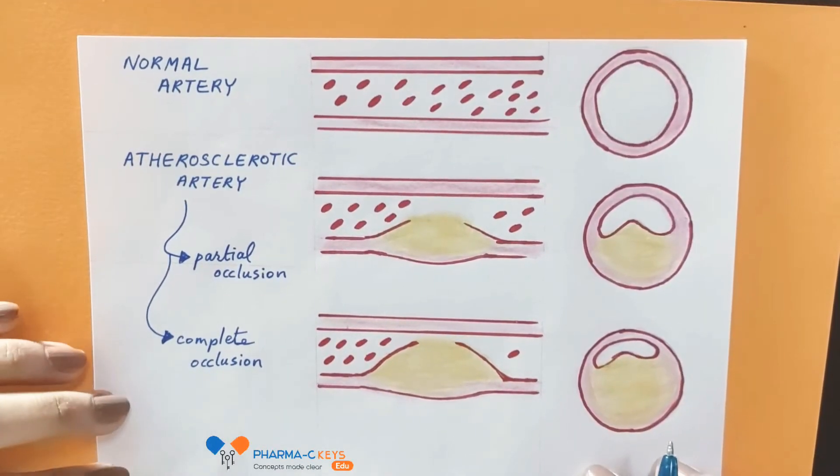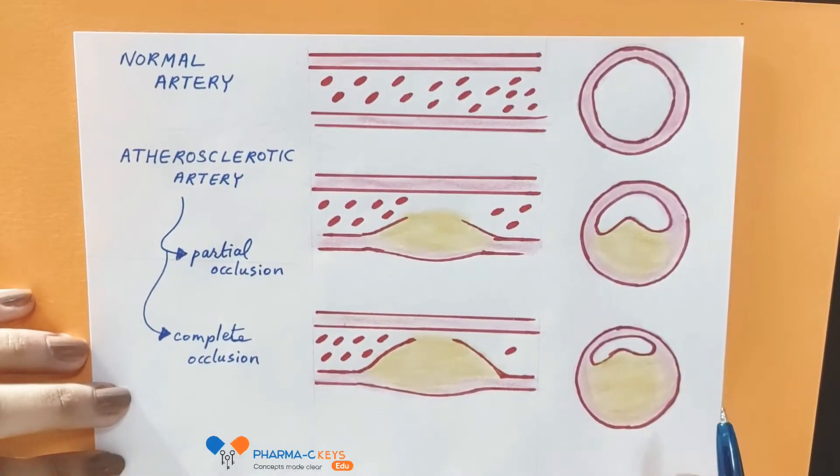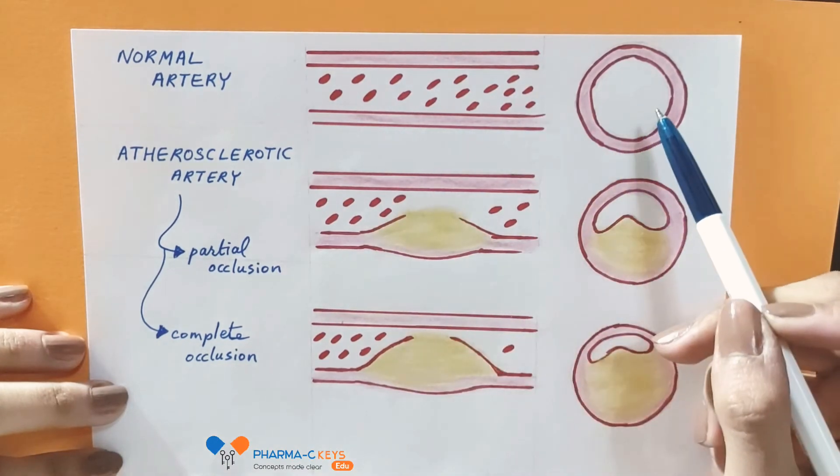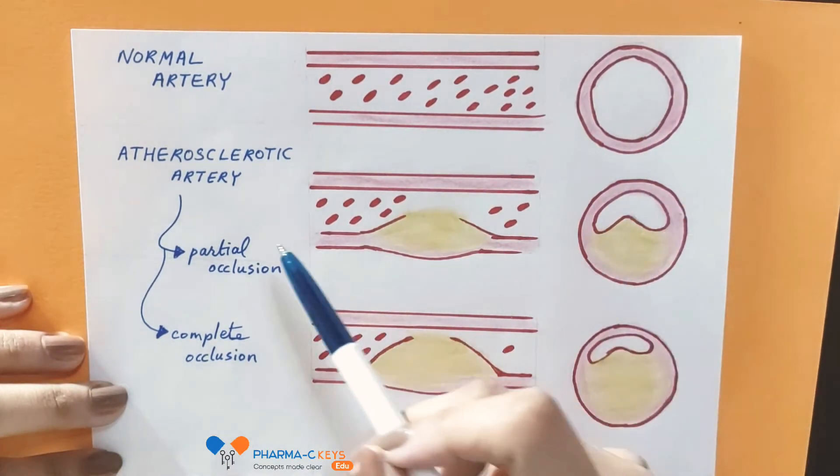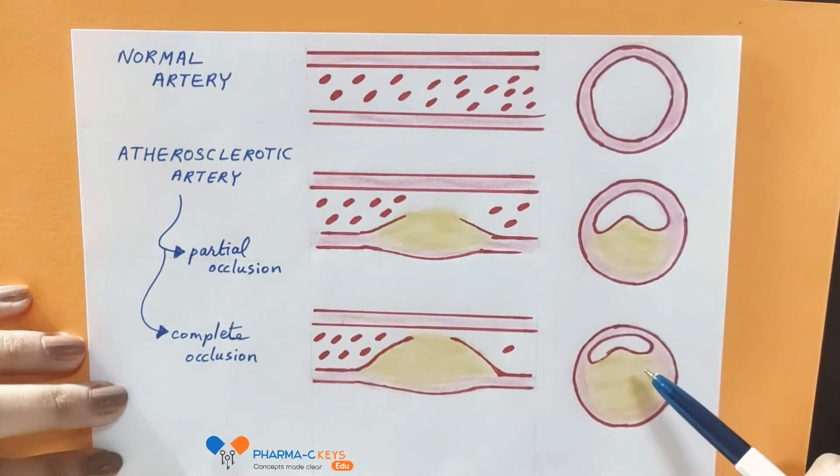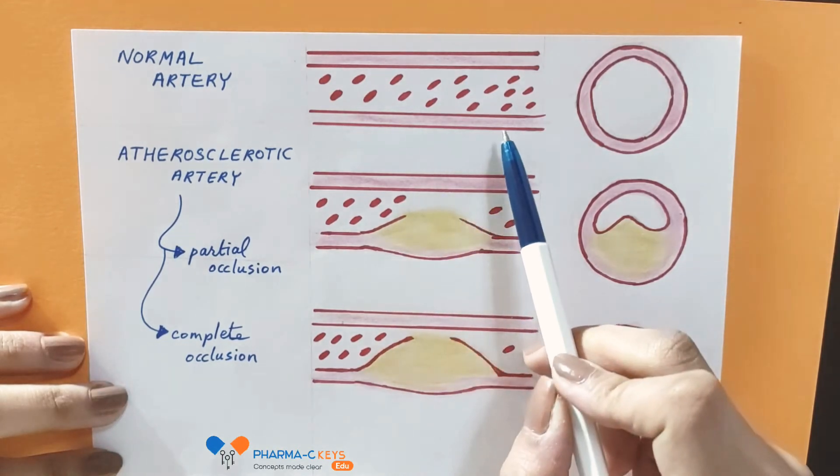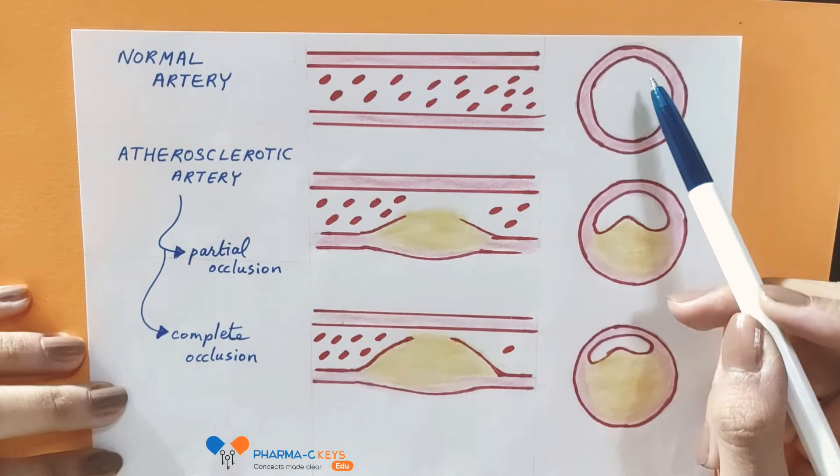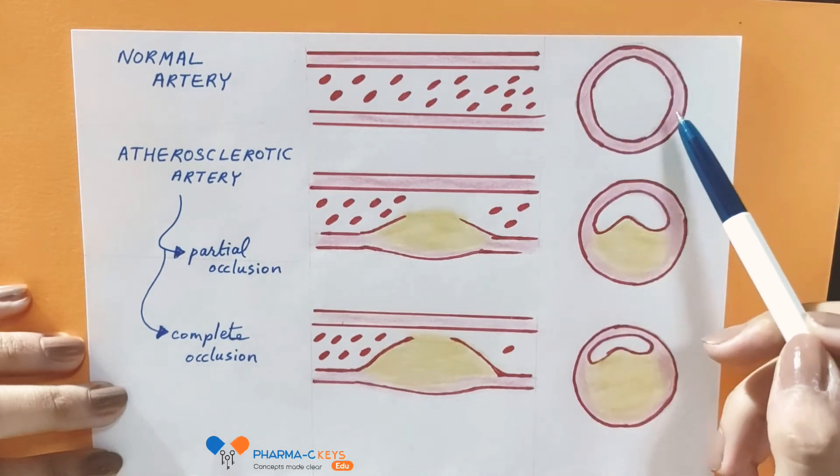Okay, so here we will briefly discuss the difference between a normal artery and an atherosclerotic artery. A healthy artery has a normal lumen and therefore adequate vital organ perfusion is maintained.